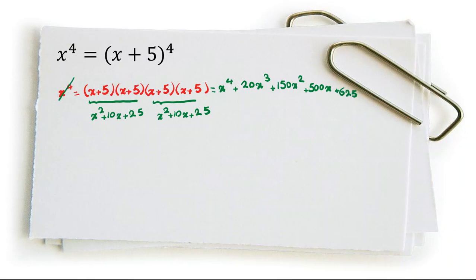Now we cancel equal terms, x to the 4. We can divide both sides by 5. So 0 equals 4x cubed plus 30x squared plus 100x plus 125.